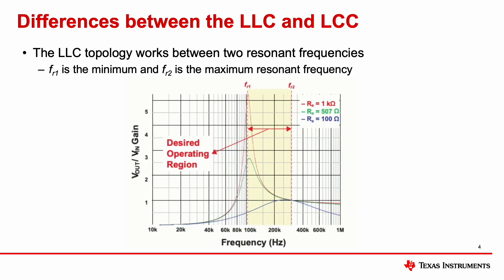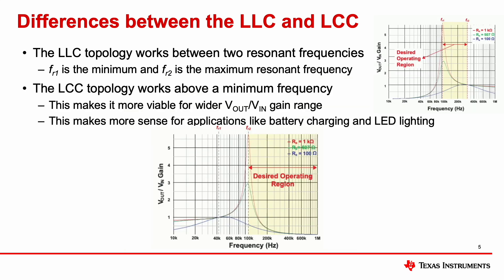So what are the differences between an LLC and an LCC? The LCC topology works between two resonant frequencies: FR1 is the minimum frequency and FR2 is the maximum resonant frequency. The LLC topology works above a minimum frequency, making it much more suitable for applications that require wider output voltages such as battery charging and LED lighting.